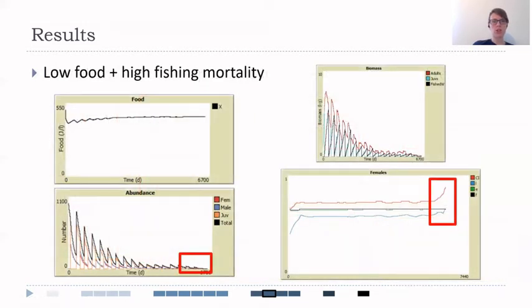Our simulations at low food and high fishing mortality actually resulted in collapse of the population. However, the same pattern was observed. As we were reaching the lowest abundance in the population, at the same time, we also saw the increase in the condition index.